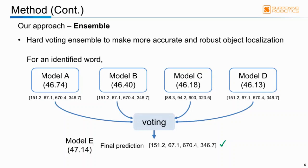Then we exploited hard-voting ensemble to make a more accurate and robust object localization. As shown in the figure, for an identified word, the four sub-optimal models might localize the word to different bounding boxes. The majority voting is then applied for each x and y coordinate to decide the coordinates of the predicted bounding box. Through this ensemble technique, we get the final model E which shows slightly better performance in the object localization.